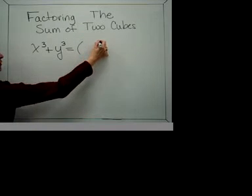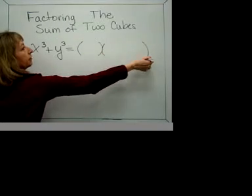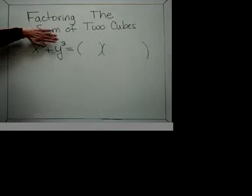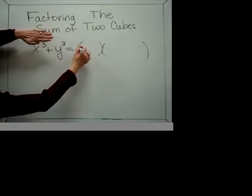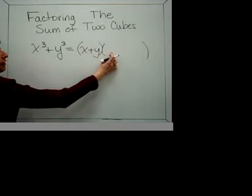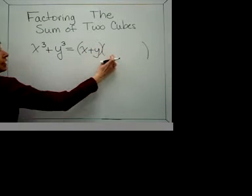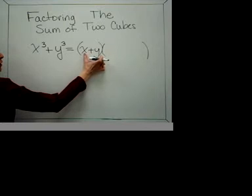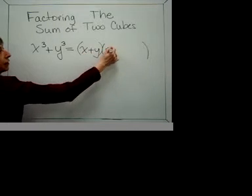That works if we have a binomial times a trinomial, where what goes in the binomial is what you see when you cover up the cubes, so that would be x plus y. In the trinomial, the three terms, in the first slot, it's the square of what's in the first term of the binomial, so that would be x squared here.